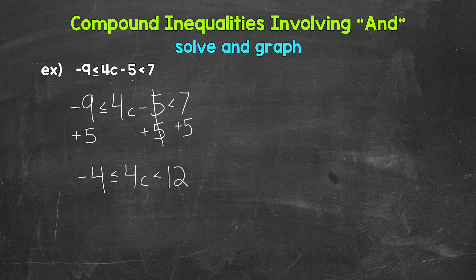So now we have 4C is greater than or equal to negative four and less than 12. We need to undo the multiplication using the inverse operation division, so divide the middle by four. That means we need to divide the left and right by four as well.